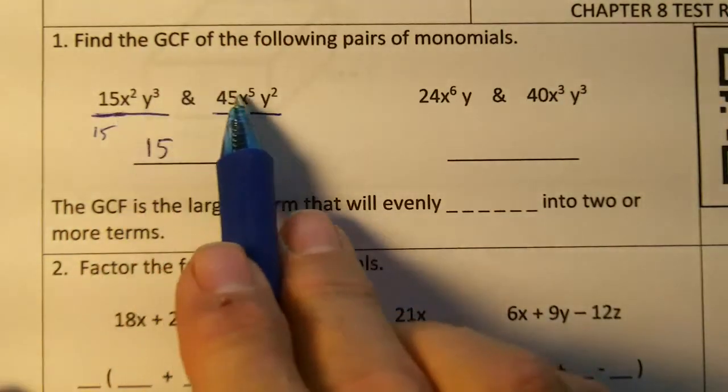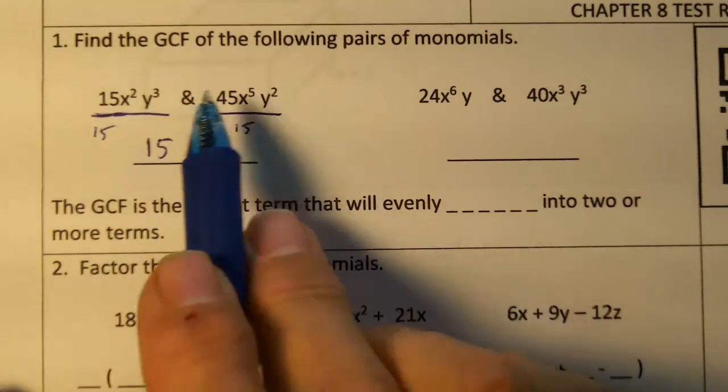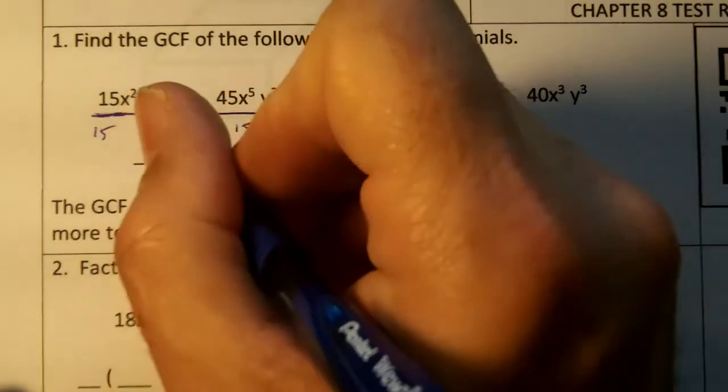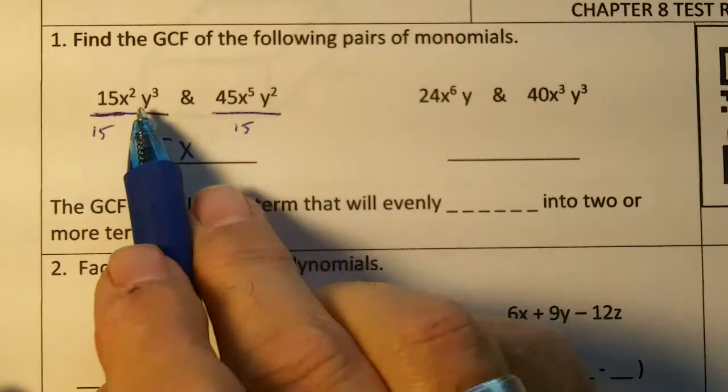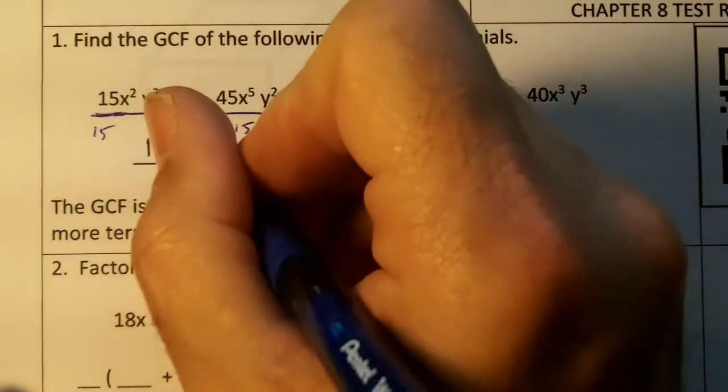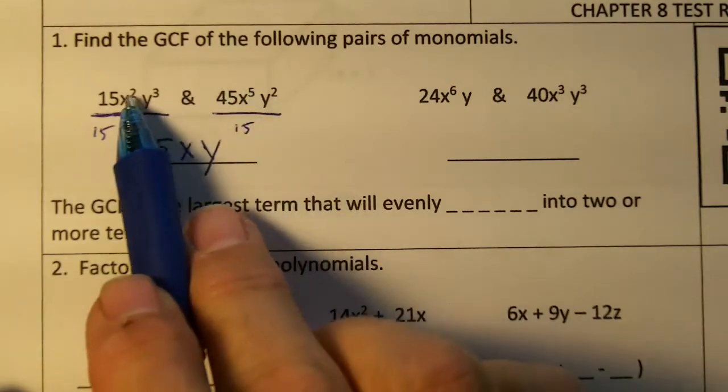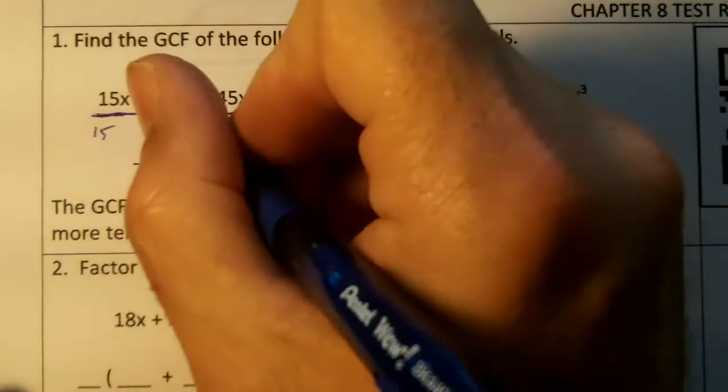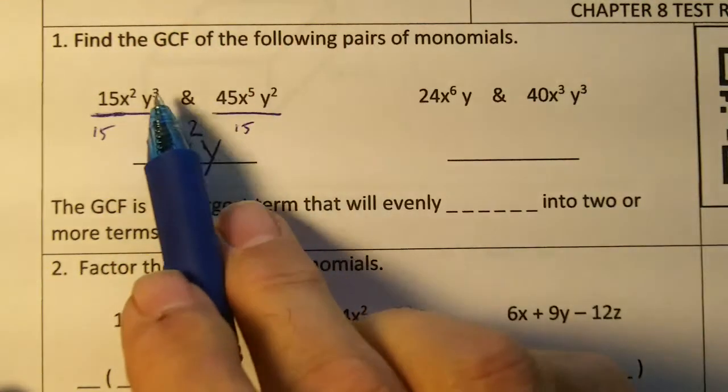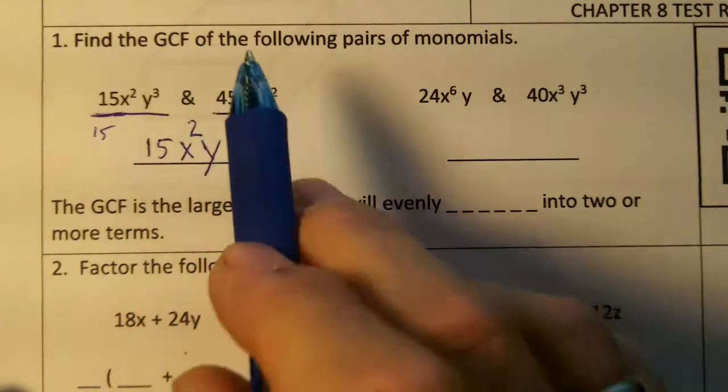Now then remember, you get the letters that are in common and pick their smallest exponents. So they both have x and they both have y. And then the smallest exponent on x, you have a 5 and a 2, the smallest exponent would be 2. The smallest exponent on y would also be 2.